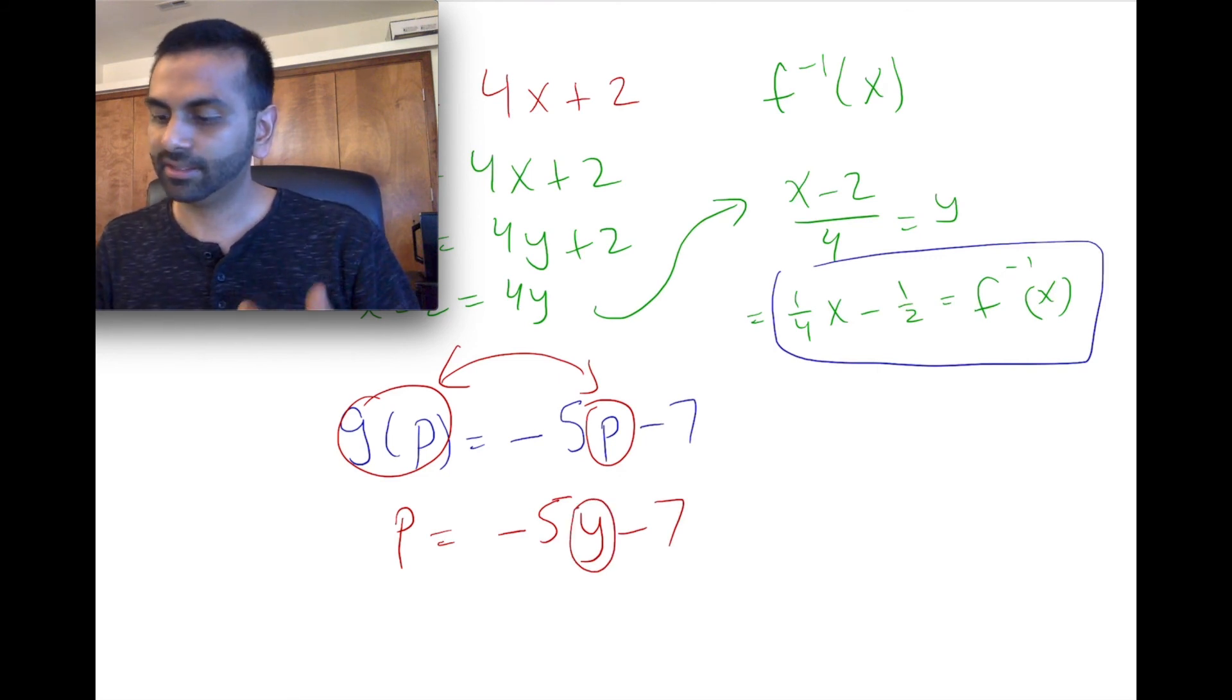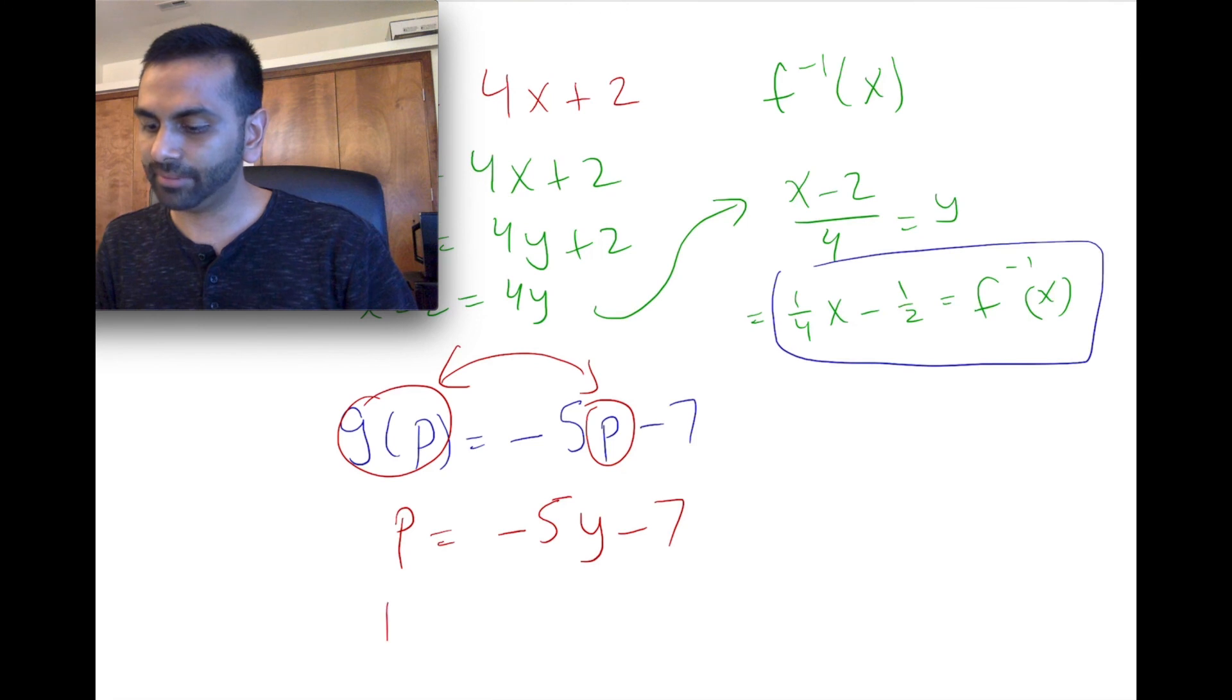And again, the same process. We just solve for the original input, add 7 to both sides, and then divide both sides by negative 5. So we get p plus 7 all over negative 5. And of course, it's possible to simplify that.